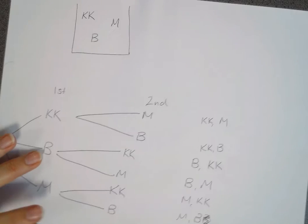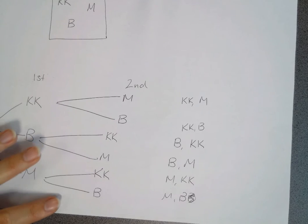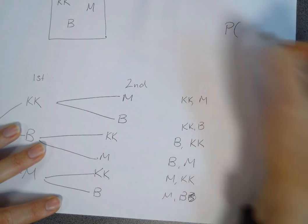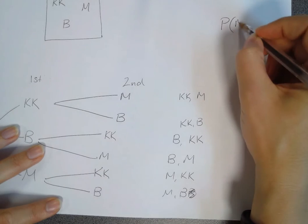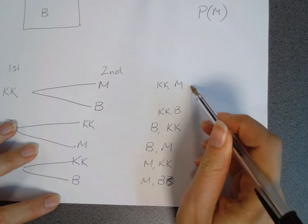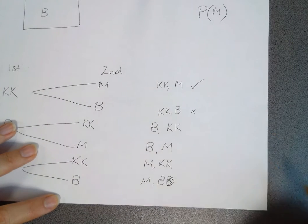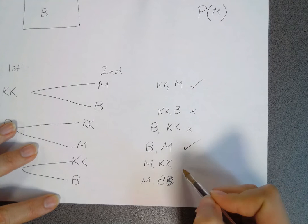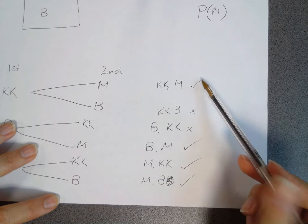We can do lots of probability for this. For example, we might ask what is the probability of getting a Mars bar. In this case, this one's got a Mars bar, this one didn't, this one didn't, this one did, did, and did.